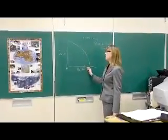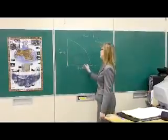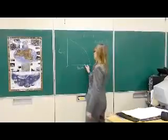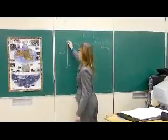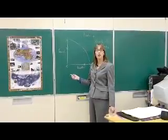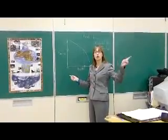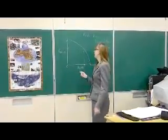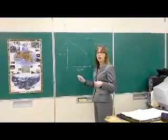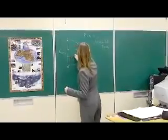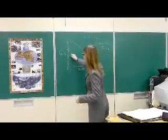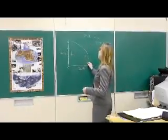Your opportunity cost for this many guns is this much butter. If you produce this much butter, this is how many guns you are essentially giving up to produce that much butter. So if we produce fewer guns, we can produce more butter.